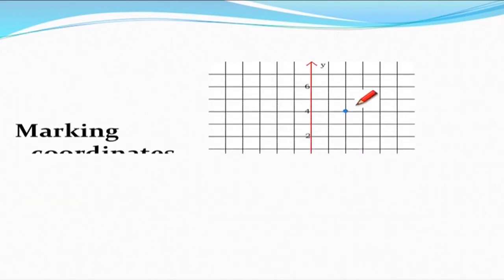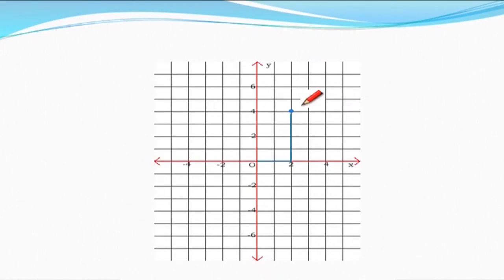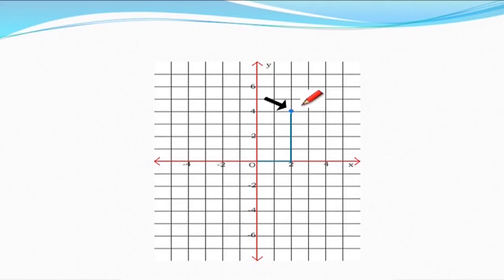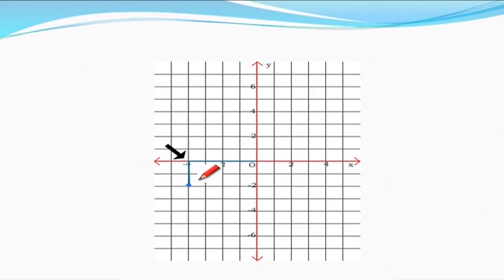Now let us understand the marking of coordinates of any point in the Cartesian plane. Here a point is represented in this plane. When we drop a perpendicular from this point to the x-axis, the line intersects the x-axis at 2. When we drop a perpendicular from this point to the y-axis, the line intersects the y-axis at point 4. So the coordinates of the point are (2, 4). For another point, when we drop a perpendicular to the x-axis it intersects at -4, and when we drop a perpendicular to the y-axis it intersects at -2. So the coordinates of that point are (-4, -2).